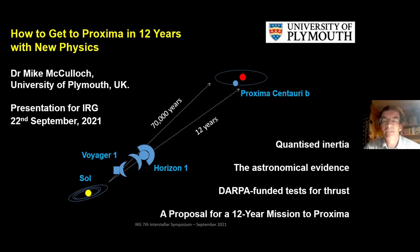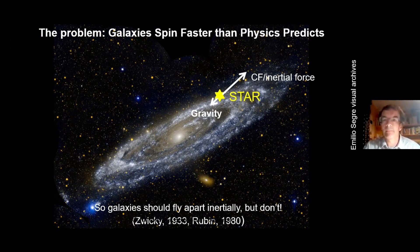I think we can do rather better than that. I'm going to introduce a theory called Quantized Inertia that I proposed, give you the astronomical evidence for it, tell you about DARPA-funded tests for thrust, and then give you a proposal for a 12-year mission to Proxima.